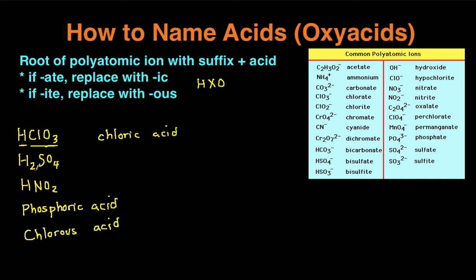Next example, H2SO4, separated into two components, the H component and then the polyatomic ion component. SO4, let's find that. SO4 is sulfate. Again, you see it ends in ATE. So that means we're going to replace that with IC. So it should become sulfic, but this is one of the exceptions. And so instead of sulfic, it actually becomes sulfuric, and then acid.